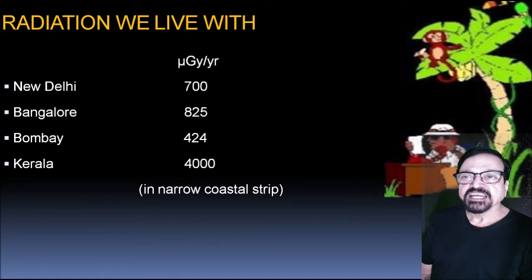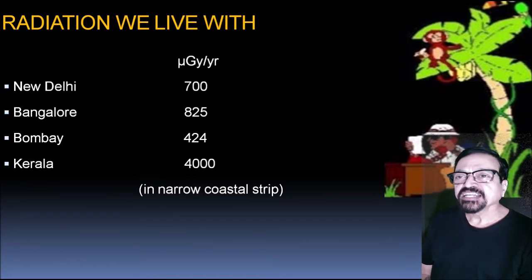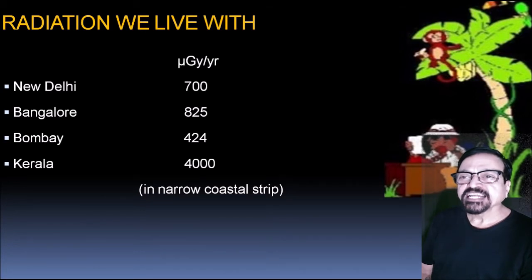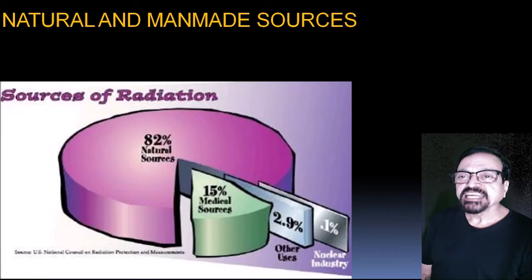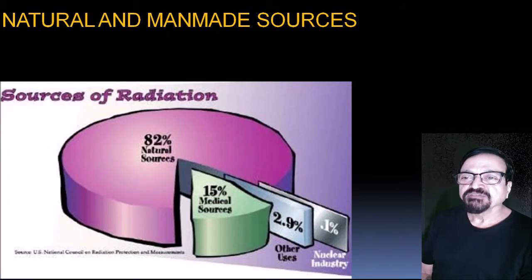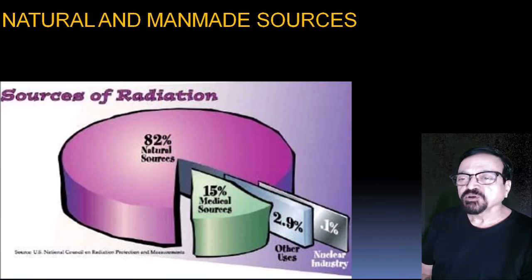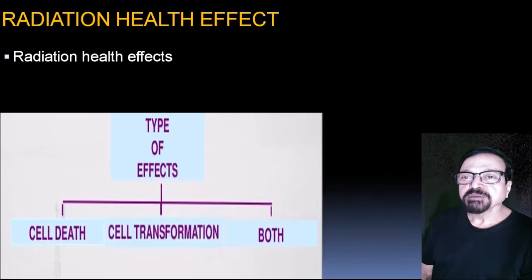For example, the background radiation received in New Delhi is 700 units, Bangalore 825, Mumbai 424, and Kerala has more due to its narrow coastal strip and radioactive materials in the earth. Looking at sources overall, 82% of radiation comes from natural sources such as cosmic and solar rays, 15% from medical sources, 2.9% from other users, and only 1% from the nuclear industry — as nuclear plants are located away from densely populated areas.